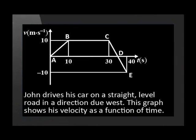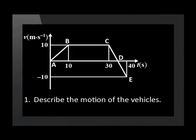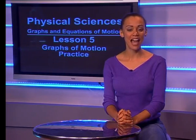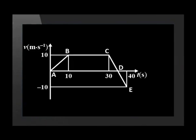Now let's look at an example which has a combination of both constant velocity and acceleration. John drives his car on a straight level road in a direction due west. This graph shows his velocity as a function of time. The first question is: describe the motion of the vehicle. Go back and look at the graph carefully and analyze what is going on. The first thing to note is what type of graph this is — as we can see from the axes, it's a velocity-time graph.